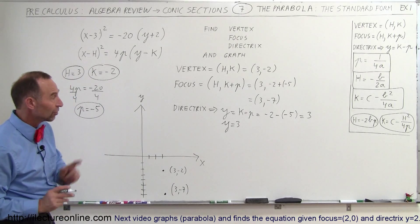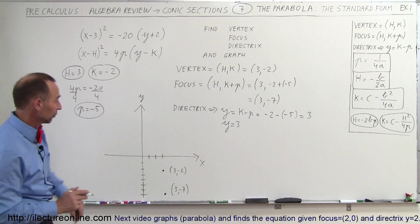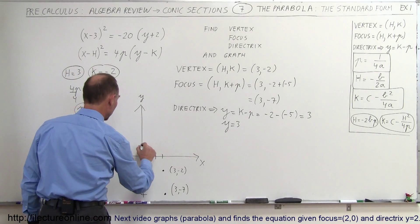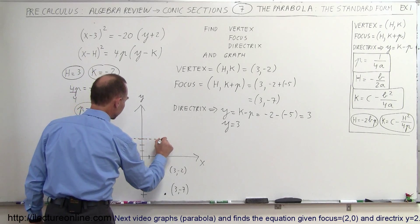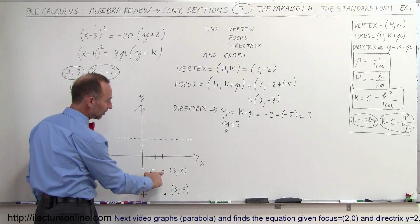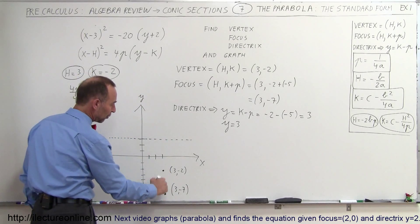And then we want to find the equation of the directrix, which says that y equals 3. That's positive 3. 1, 2, 3. I'll put a dashed line in for the directrix. Right there. So there's the vertex, there's the directrix, there's the focus,